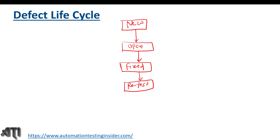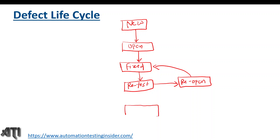While retesting, if we find the defect is still not working as expected, we reopen the defect and assign it back to the development team — the status becomes 'Reopen'. The developers rework on their fixes, make code changes, and assign it back to the testing team again for retesting. If it is working as expected this time, we close the defect — 'Close' is the last status of the defect. This is the complete defect life cycle.